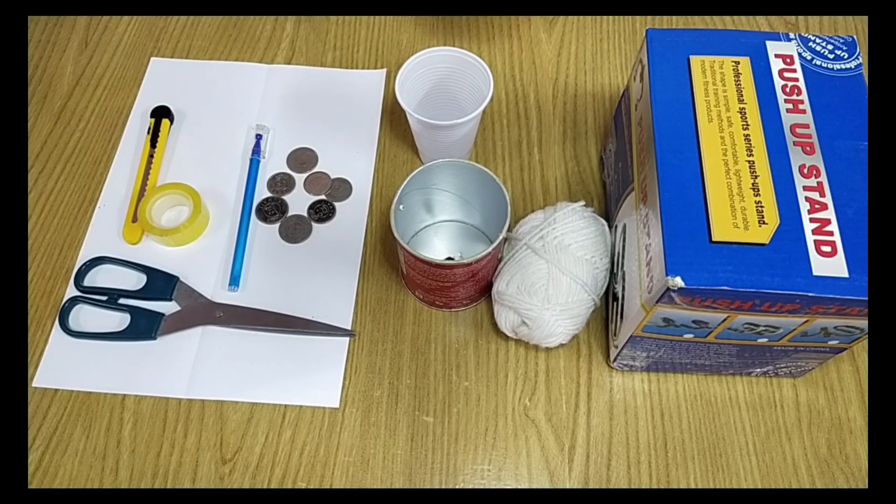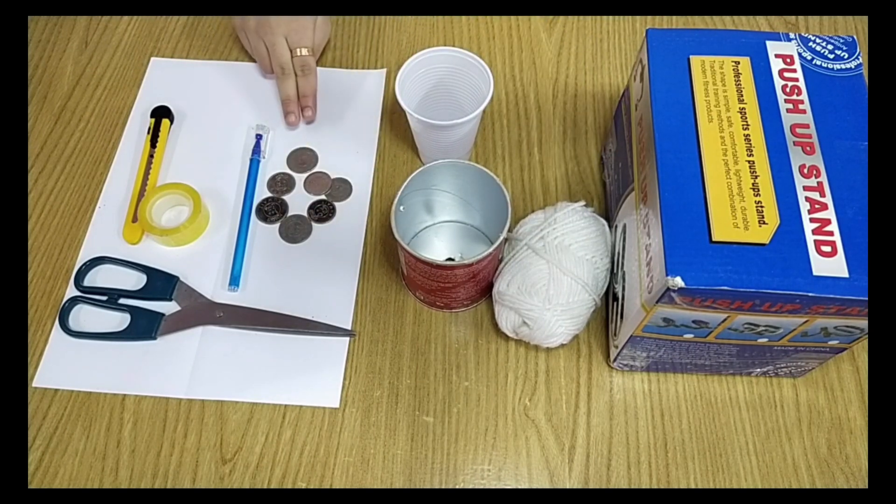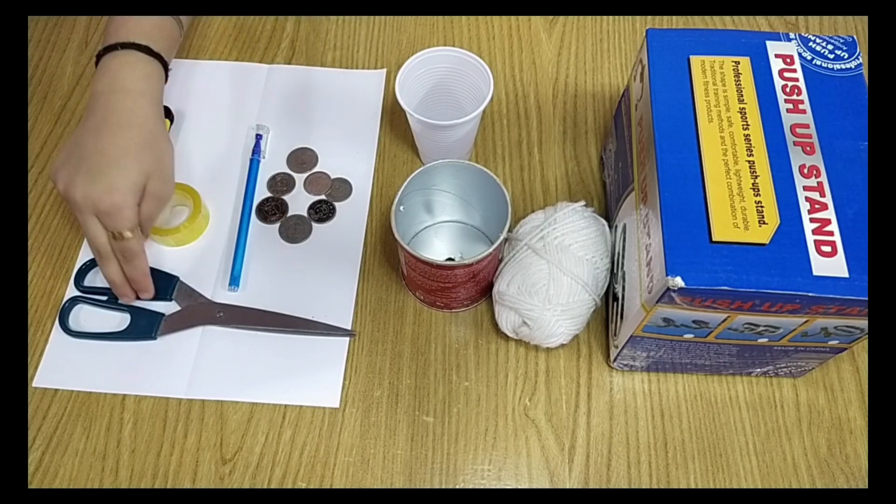To make a seismograph we need a cardboard box, thread, plastic cup or a cardboard box, few coins, pen, scissors, tape cutter, and a paper.